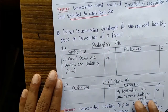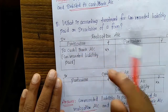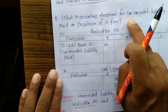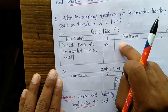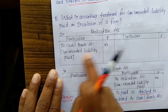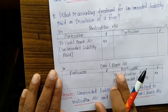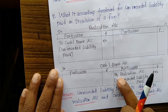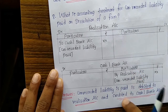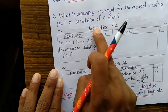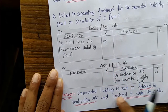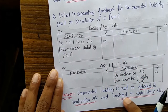Next question: what is the accounting treatment for an unrecorded liability paid on dissolution of a firm? For an unrecorded liability paid, the entry is: debit Realization Account, and credit Cash or Bank Account. That is, the liability paid is debited to Realization Account and credited to Cash or Bank Account.